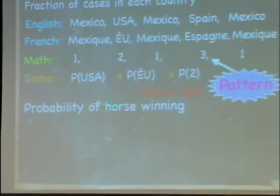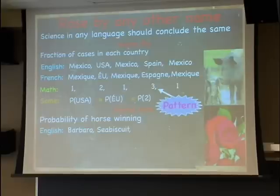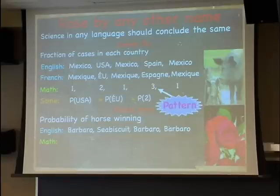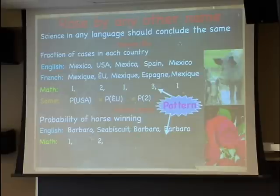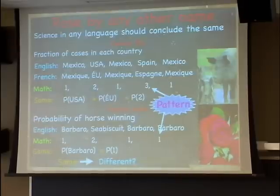To use a prettier example, suppose we're looking at the probability of a horse winning. We see that Barbaro won, Seabiscuit won, Barbaro won again, then Barbaro again. If we do it using patterns, Barbaro is one, Seabiscuit is two, giving pattern 1, 2, 1, 1. We'd like the probability of Barbaro to be the same as the probability we give to one. This is what we think is obviously the same — and what we'll try to convince ourselves is actually different, and if different, maybe better.